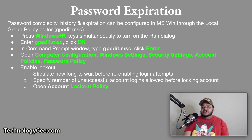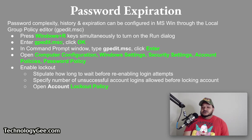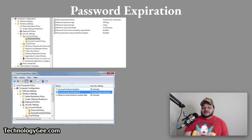To see current settings or make changes, open Computer Configuration, Windows Settings, Security Settings, Account Policies, Password Policy. To enable account lockout, stipulate how long to wait before re-enabling login attempts and specify the number of unsuccessful account logins allowed before locking the account — also known as the account lockout threshold — then click Account Lockout Policy. Screenshots are provided to help you navigate to these account policies.